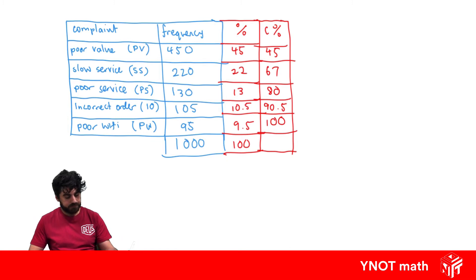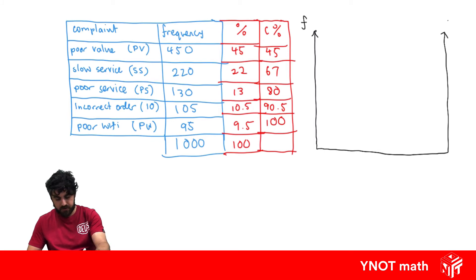Now we want to draw a Pareto chart. We're going to draw it set up here where on the left we're going to have our frequency, on the right we're going to have our cumulative percentage, and down on the x-axis we're going to have each of our complaints. We've got five, so we're going to have poor value, slow service, poor service, incorrect order, and poor Wi-Fi. It's important that they're in descending order.